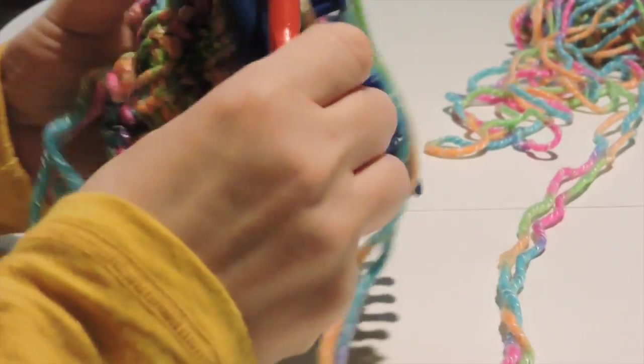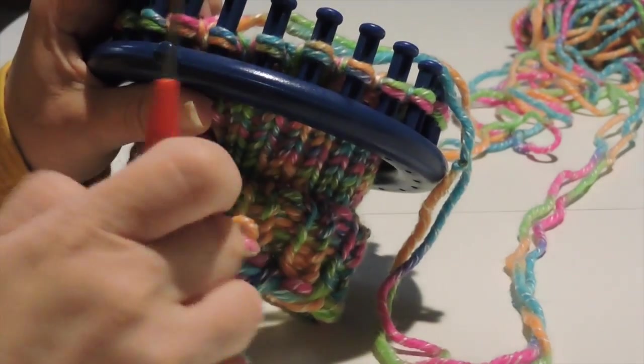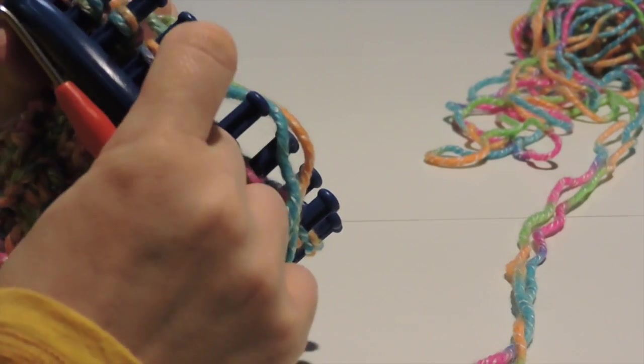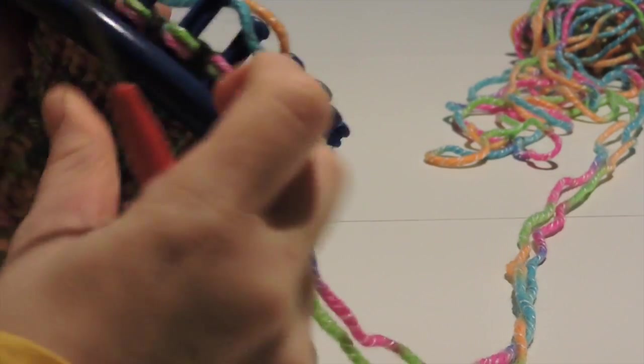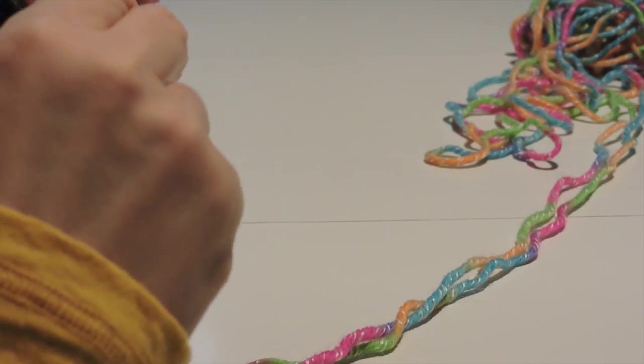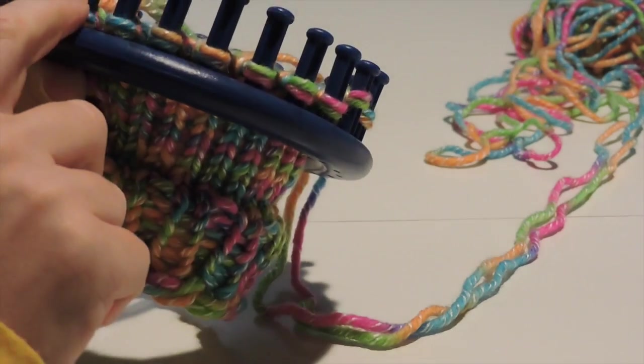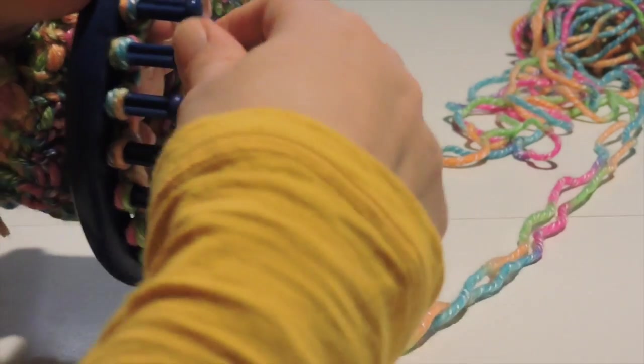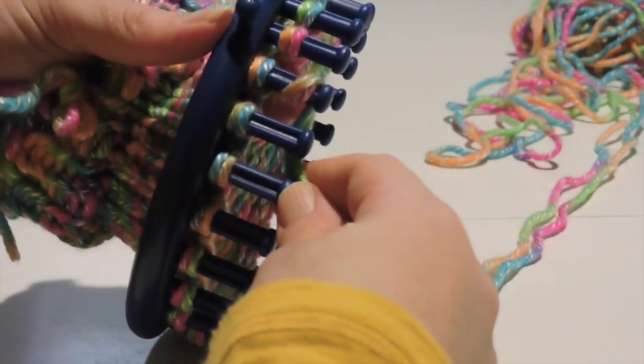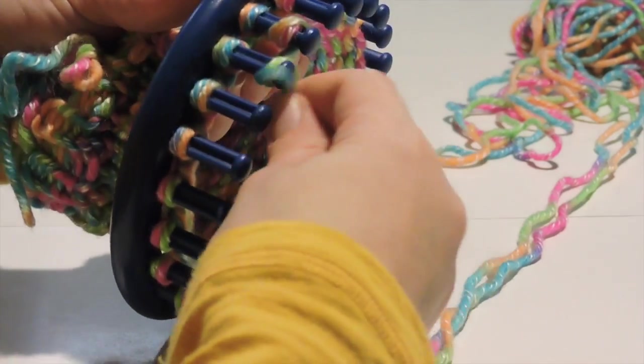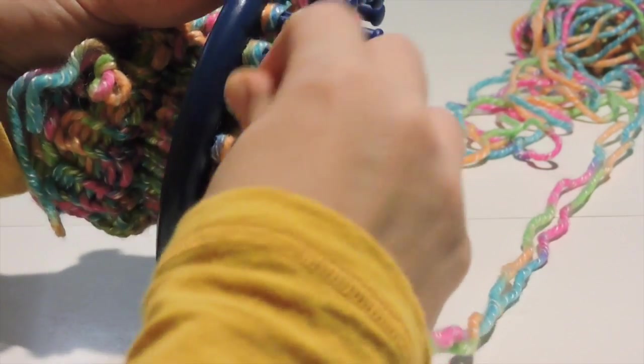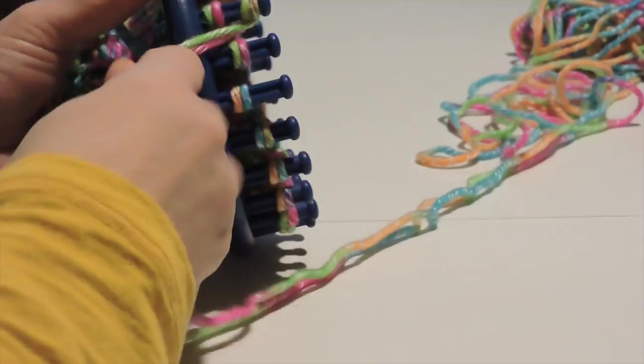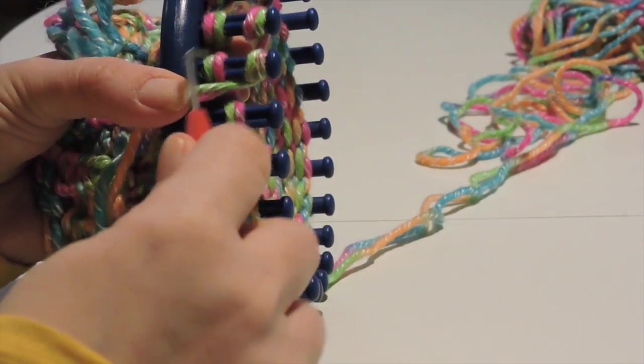The next part we're going to be working on is the thumb portion. What we're going to do is count from the anchor peg, count over seven pegs, and again this will measure our thumb. So what we're going to do is do an E-wrap, start at the first peg and then continue wrapping until you get to the seventh peg.